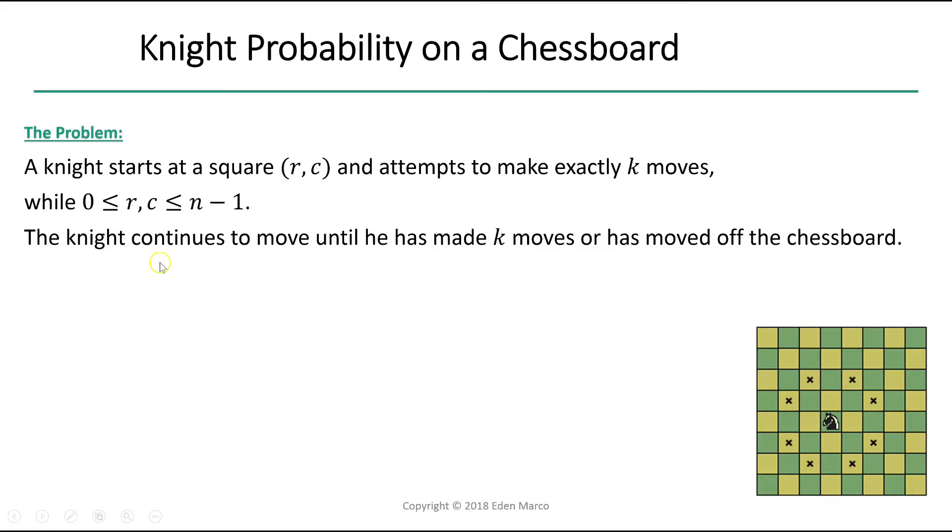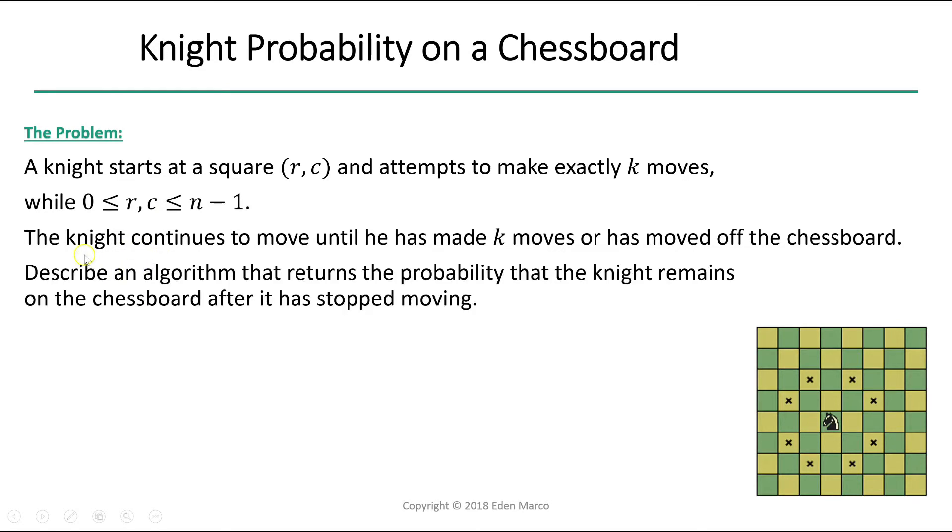This means our knight starts in bounds on our chessboard. The knight continues to move until he has made K moves or has moved off the chessboard. Describe an algorithm that returns the probability that the knight will remain on the chessboard after it has stopped moving.